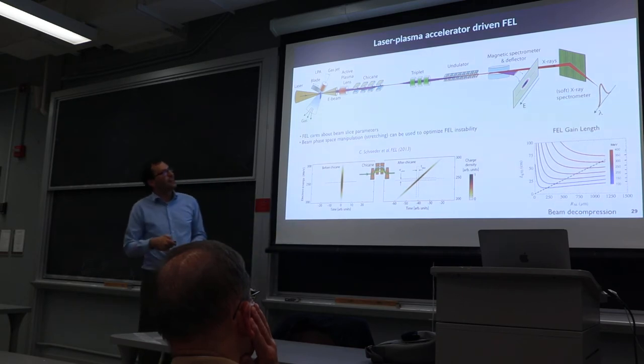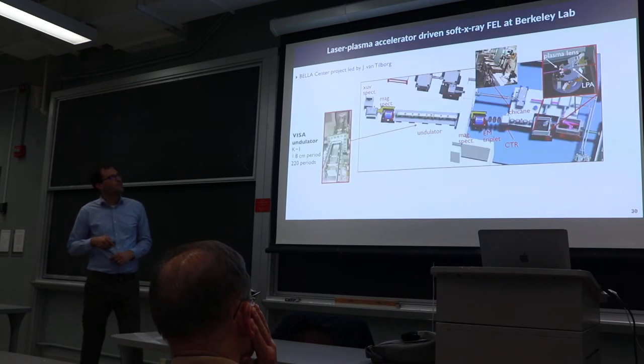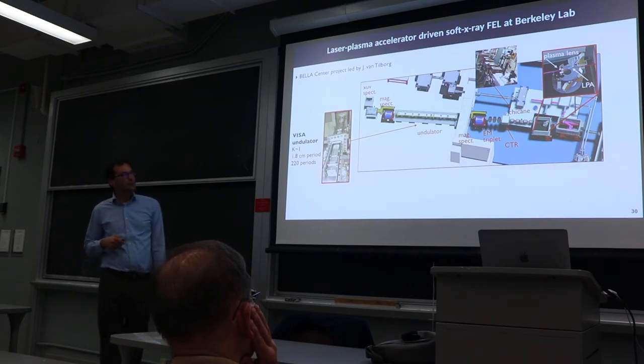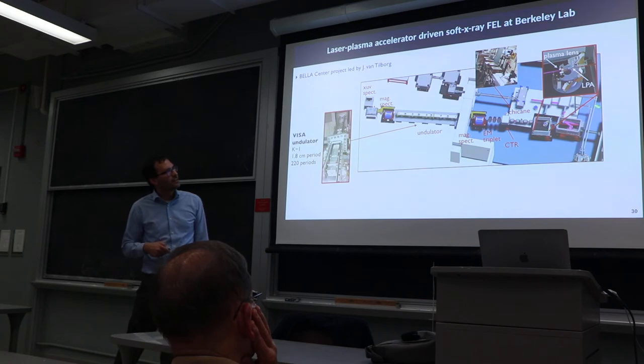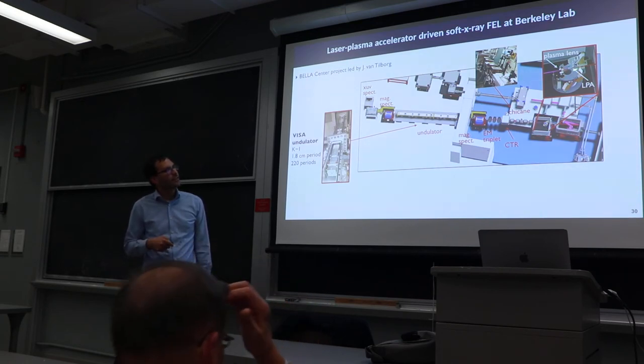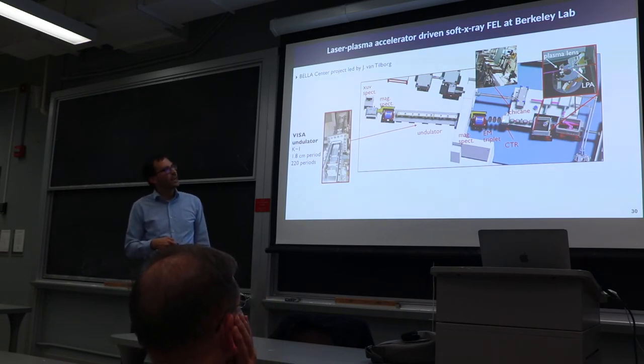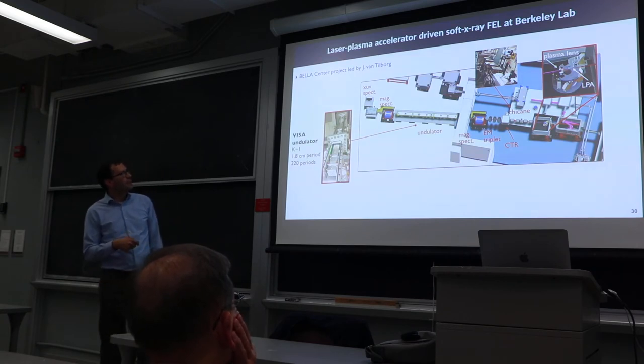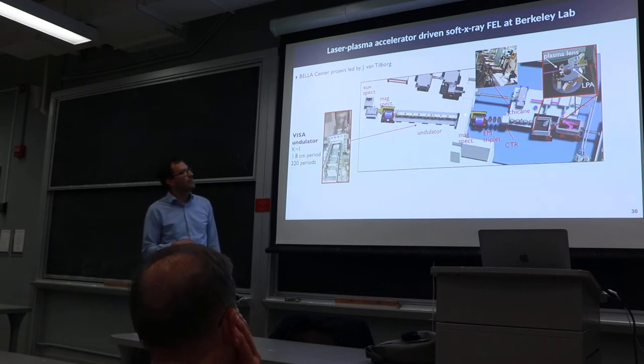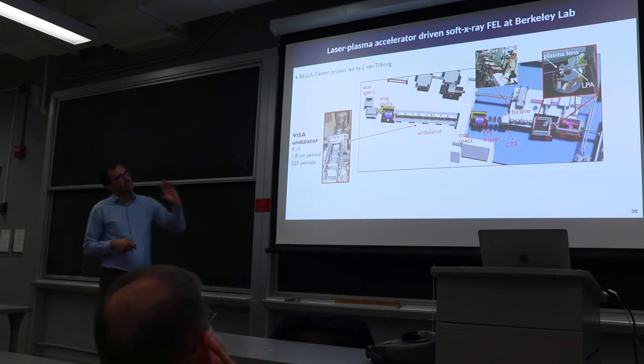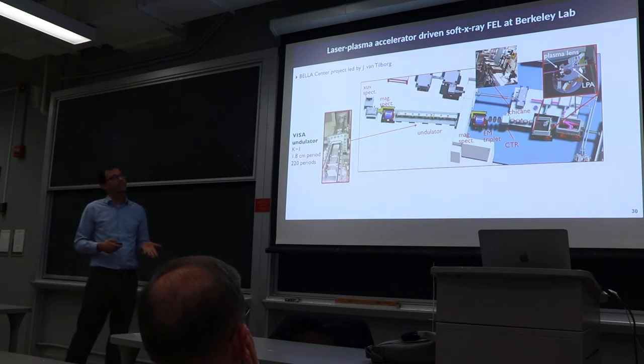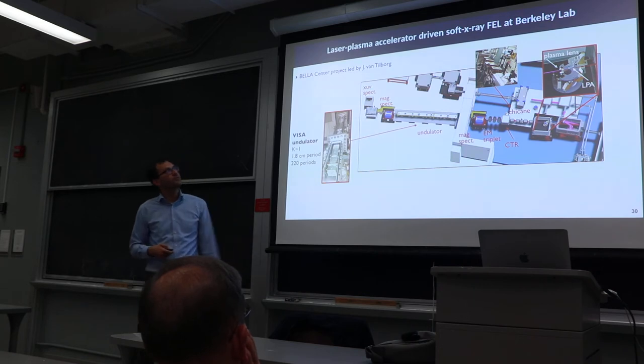Here are pictures from the 100 terawatt undulator line. This is a project led by Jeroen van Tilborg at the BELLA Center. Here is the laser focused into this little chamber—there's an LPA and then a platform lens to capture and focus the beam. We have this chicane to stretch it and a pair of triplets to focus the beam on the entrance of this undulator. We have installed what's called a VISA undulator, about a two centimeter period. This is working on proof of principle demonstration of beam phase space manipulation to lase, with the ultimate goal to produce soft x-rays at the 30 nanometer level.